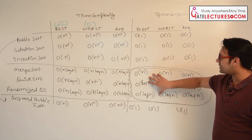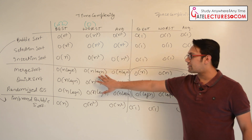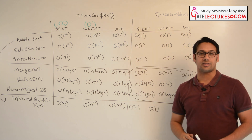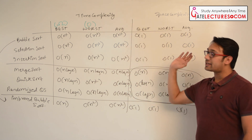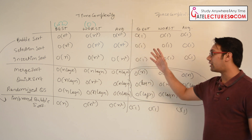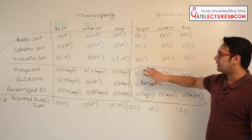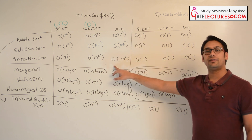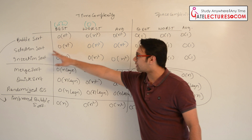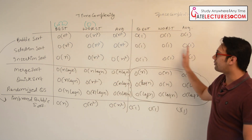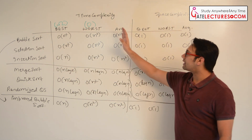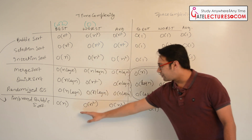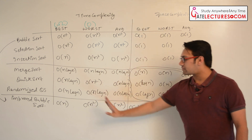If space increases then time complexity decreases, and if space decreases then time complexity increases. That means there is a space-time trade-off. In these three sorting algorithms — bubble sort, selection sort, and insertion sort — the space is order of one only, so average case and worst case are order of n square. In improved bubble sort, average case and worst case are also order of n square.